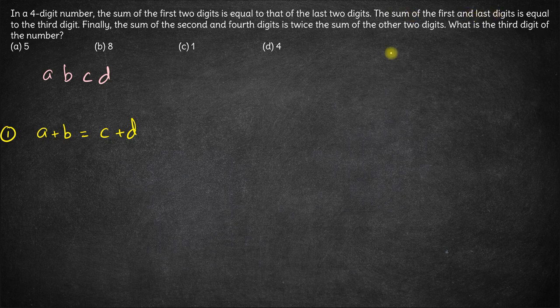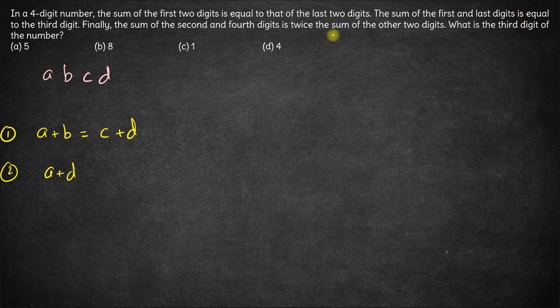Next, sum of the first and last digits, that is A plus D, is equal to the third digit which is C. So this is the second equation: A plus D equals C.